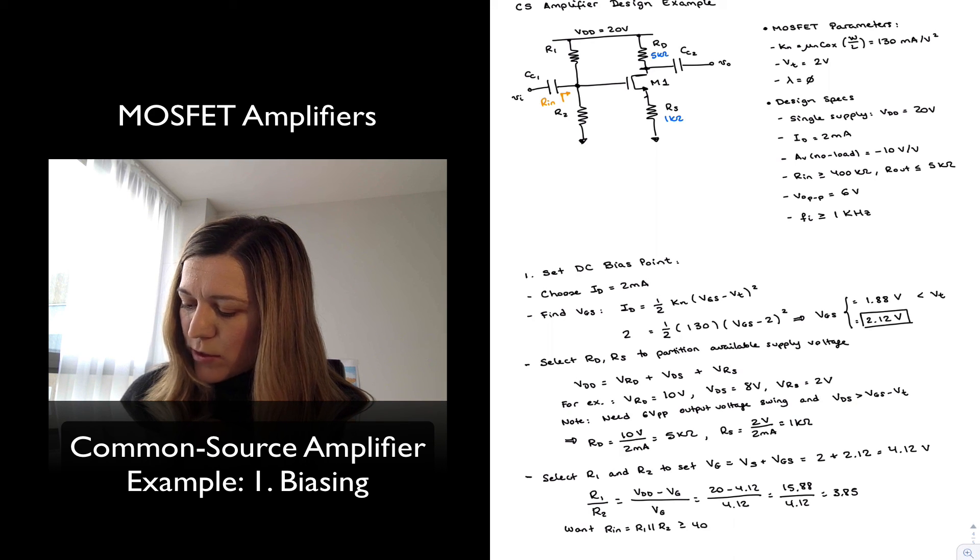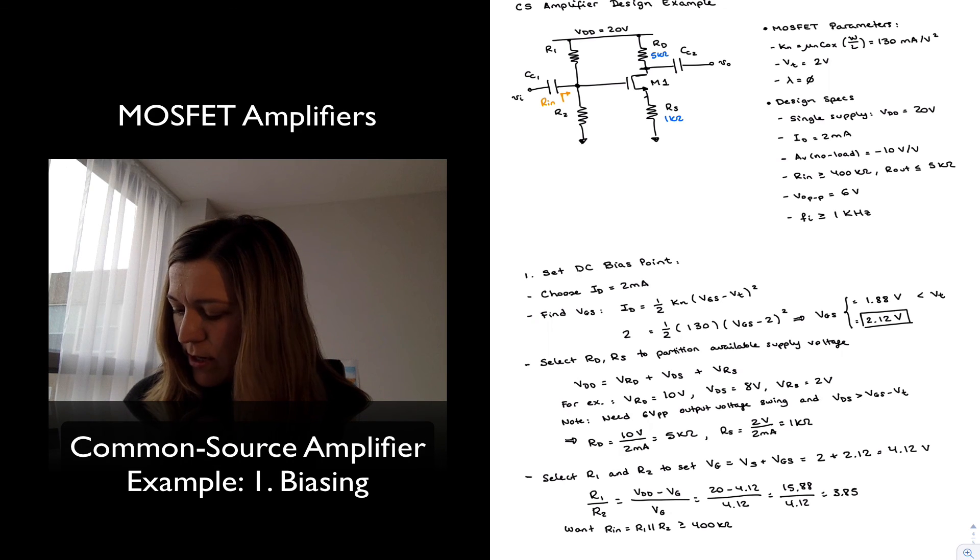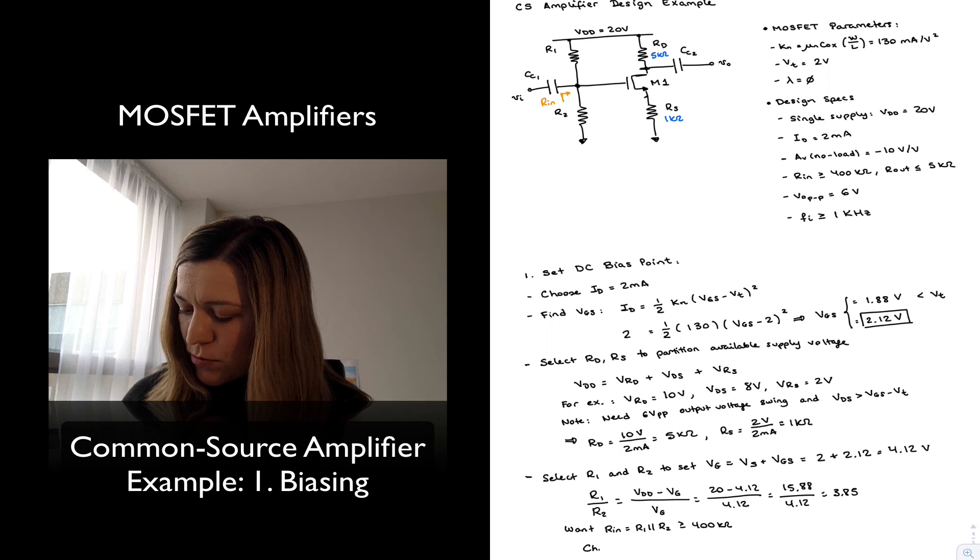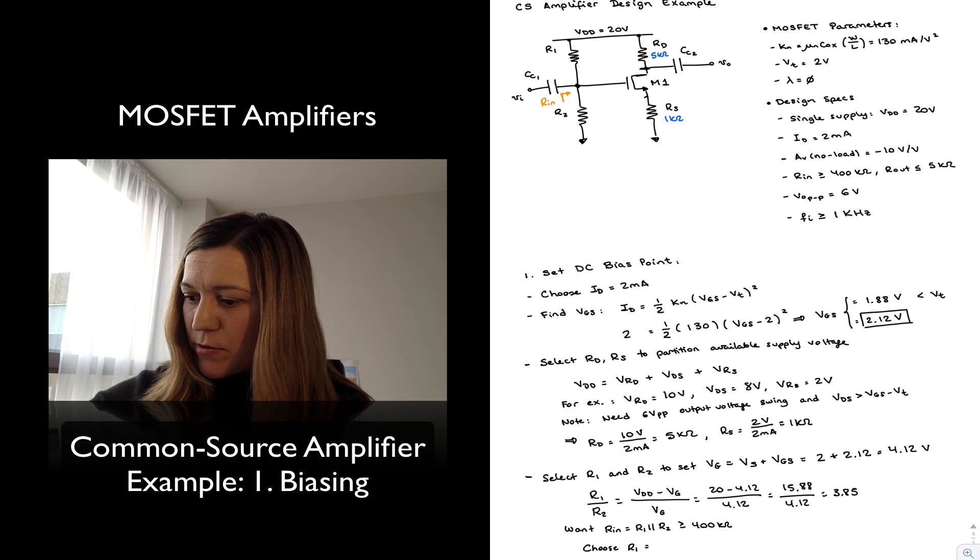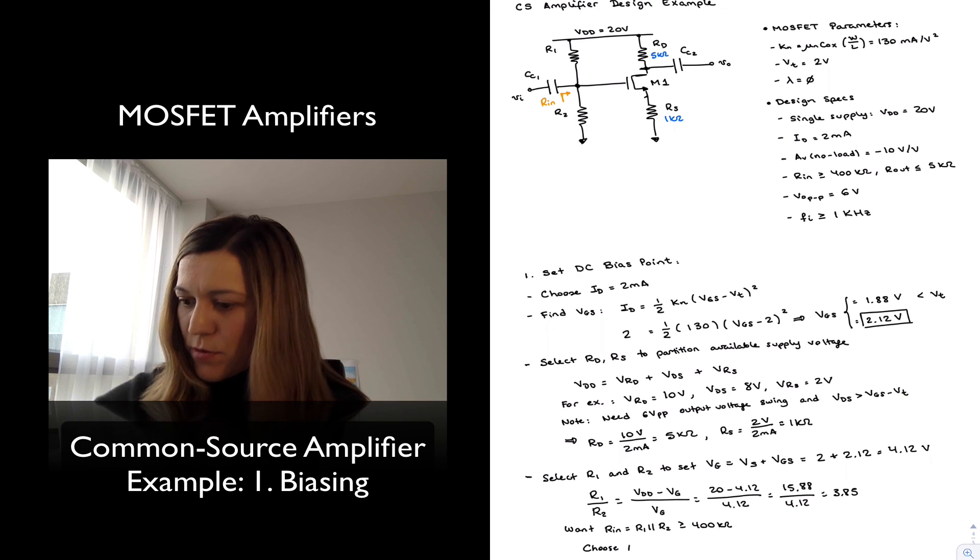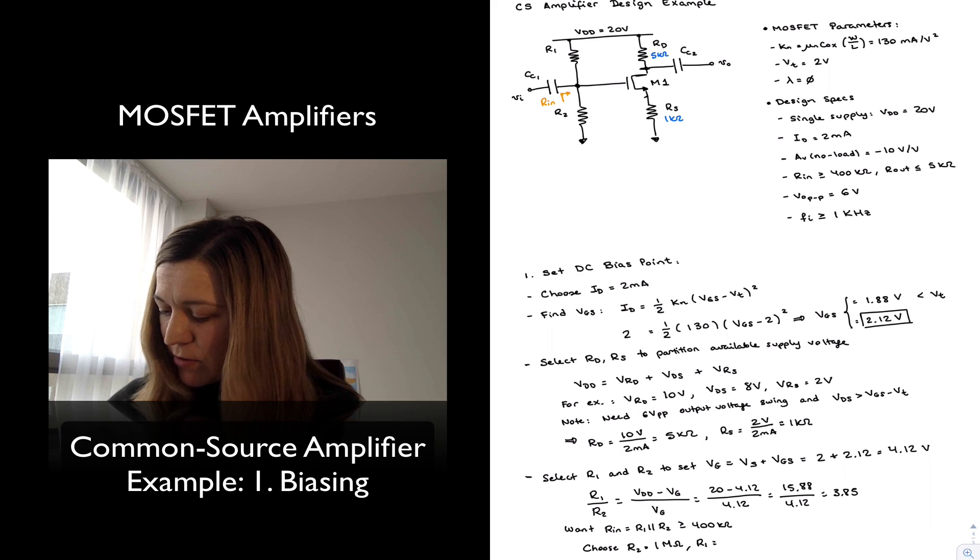So something to note here is that I want R1 in parallel with R2 to be greater than or equal to 400 kilo-ohms. I'm going to go ahead and choose my R2, which is the smallest of the two, R2 to be equal to 1 mega-ohm, and then R1 will be 3.85 times that, or 3.85 mega-ohms.